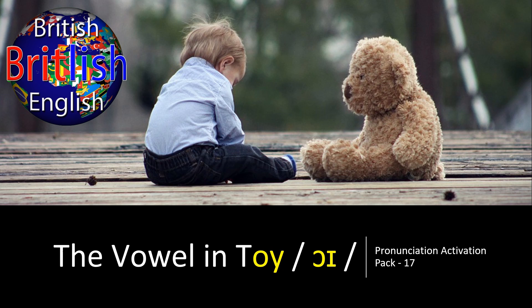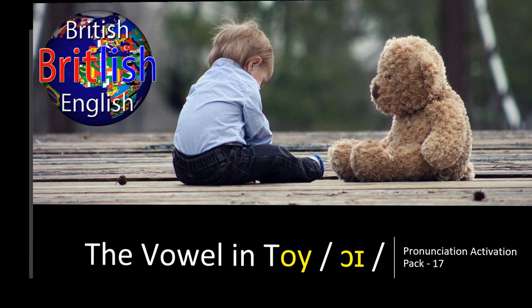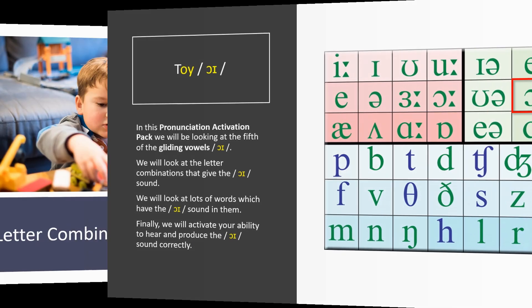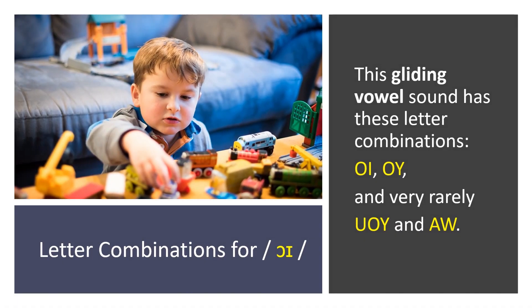The Vowel in TOI – OI Pronunciation Activation Pack 17. In this pronunciation activation pack, we will be looking at the fifth of the gliding vowels – OI. We will look at the letter combinations that give the OI sound, lots of words which have the OI sound in them, and finally we will activate your ability to hear and produce the OI sound correctly.